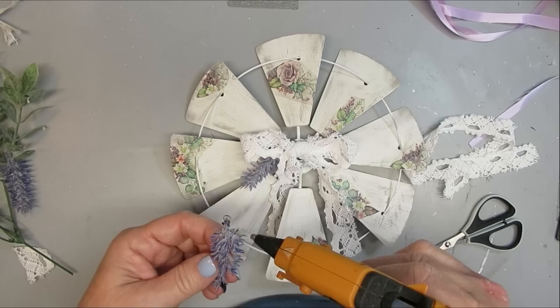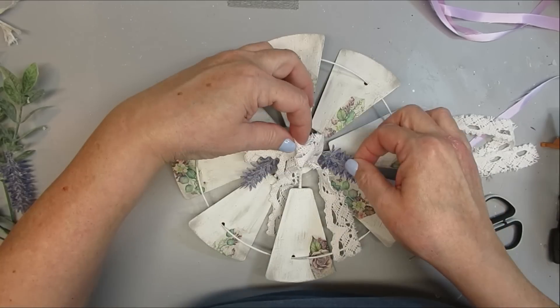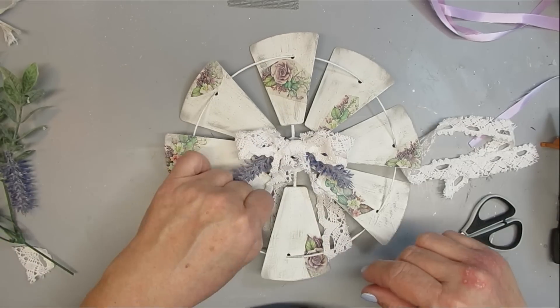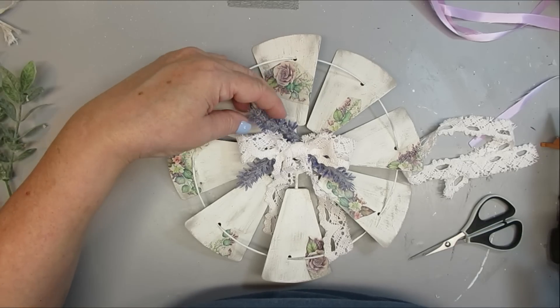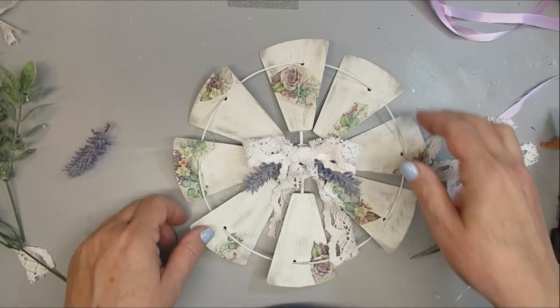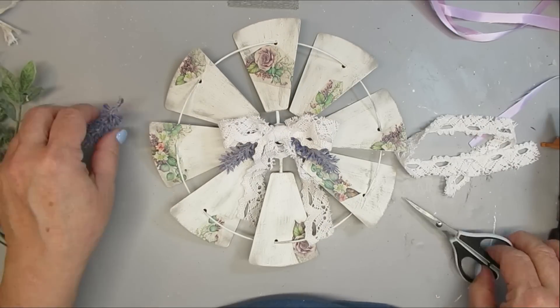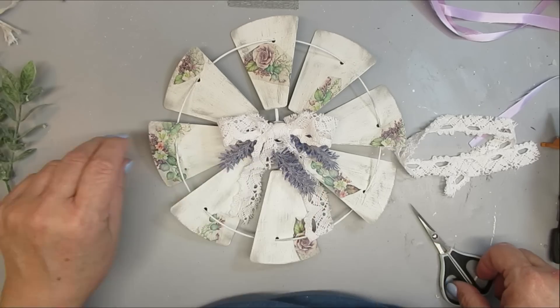I'm using a lace ribbon which I tied into a bow, and now I'm going to add some lavender underneath it. And I tried making this bow off-center, but it just didn't look right. So this is one of the rare times that I put things in the center.